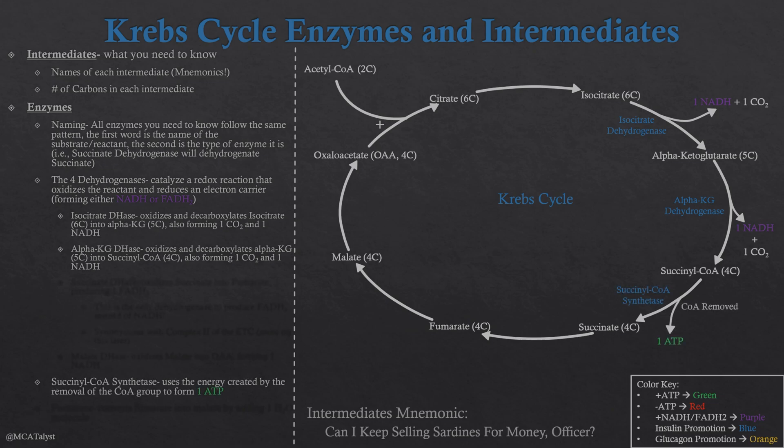The next enzyme is succinyl-CoA synthetase. This enzyme takes succinyl-CoA, loses the coenzyme A side group, and that releases energy that we can give directly to the production of ATP. This leaves us with succinate, a four-carbon molecule, which is going to go through another dehydrogenase reaction to produce fumarate.